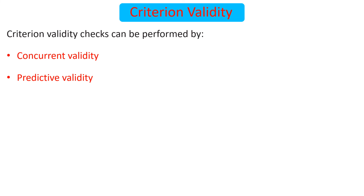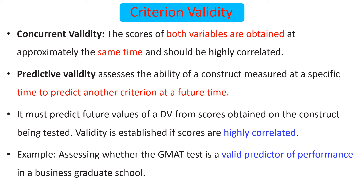Criterion validity can be checked by two approaches: concurrent validity and predictive validity. In concurrent validity, scores of both variables are obtained at approximately the same time and should be highly correlated for validity to be established. In predictive validity, we assess the ability of a construct measured at a specified time to predict another criterion at a future time — it must predict a future value of the dependent variable from the scores currently obtained. Validity is established if the scores are highly correlated.